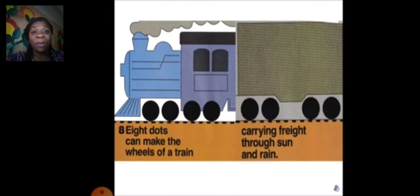Eight dots can make the wheels of a train, carrying freight through sun and rain.